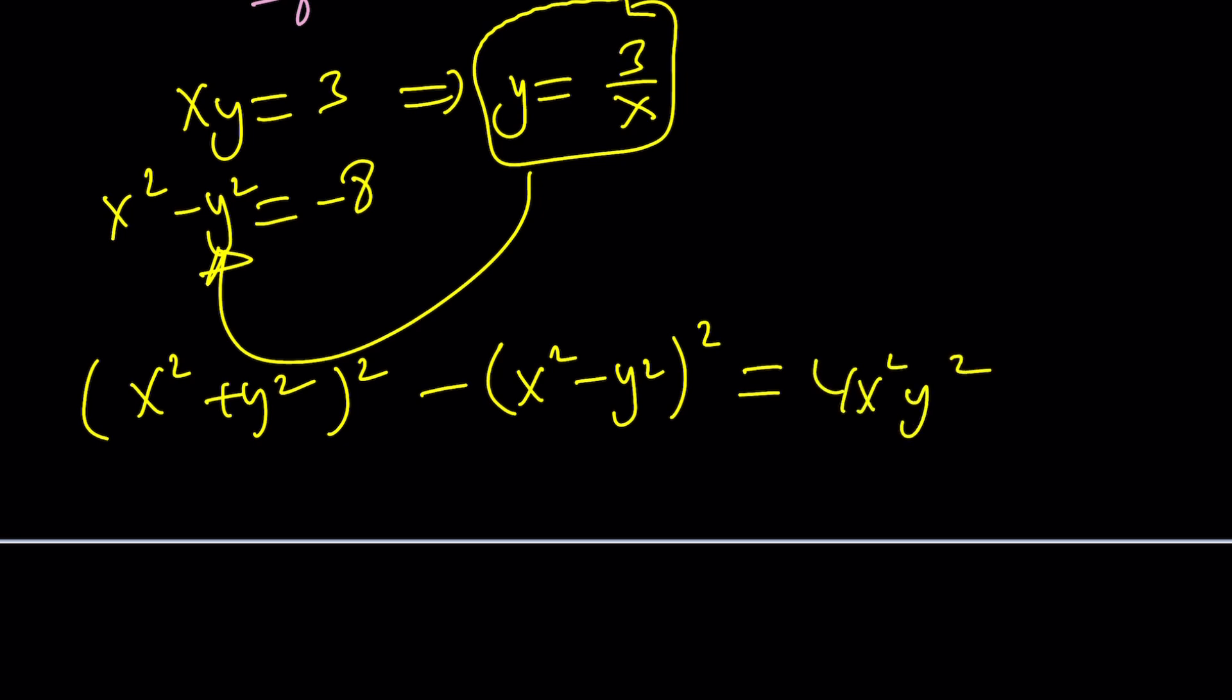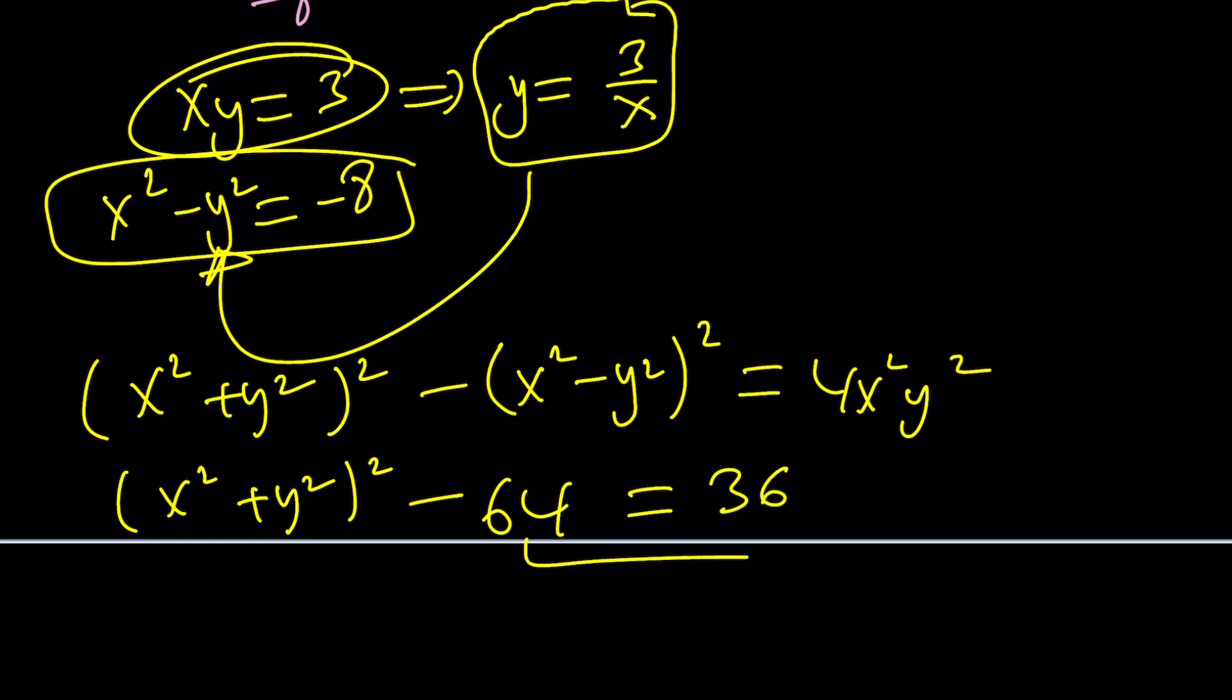In other words, you get 4x squared y squared. Nice. This gives us x squared plus y squared squared minus this number squared, which is 64, equals this number squared times 4. Squared the three, nine. Multiply by four, you get 36. Add the 64.